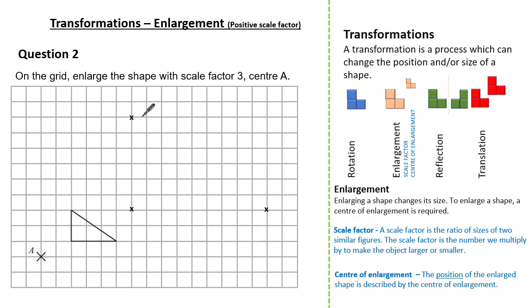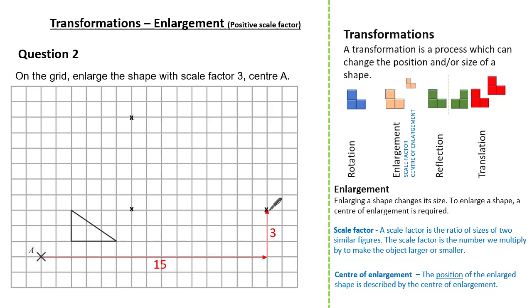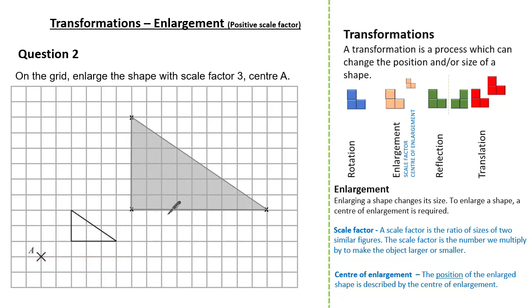We have our enlarged shape, but I'm also going to check another way by looking at our vertices. From the center of enlargement to another vertex we went five to the right and one up. Multiplying by a scale factor of three means our new vertex is 15 to the right and three up, which confirms the vertex placed before. For the last vertex, from the center of enlargement I went two to the right and three up, so multiplying by three gives six to the right and nine up. All vertices are confirmed and the diagram is complete.